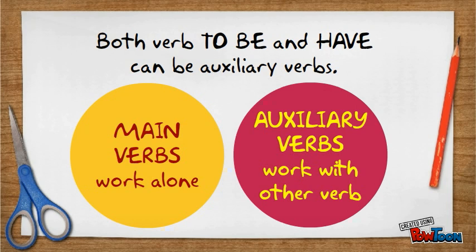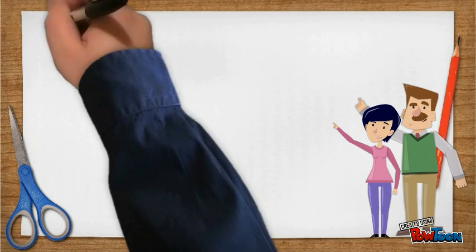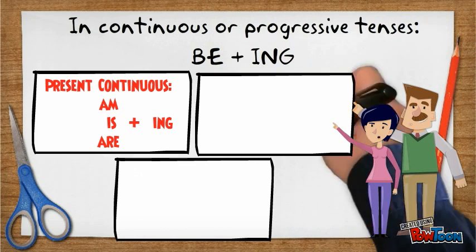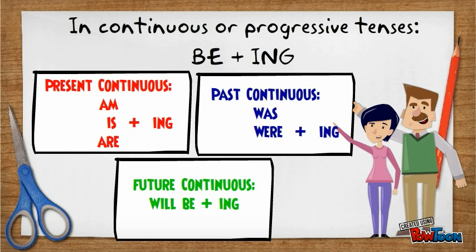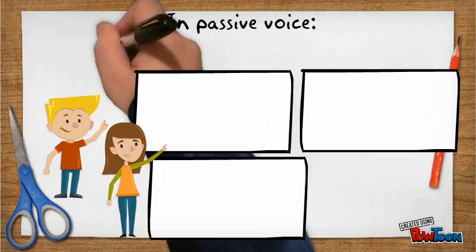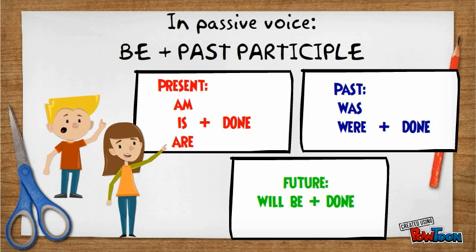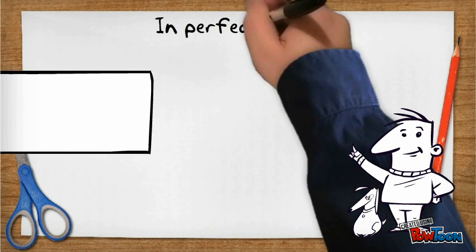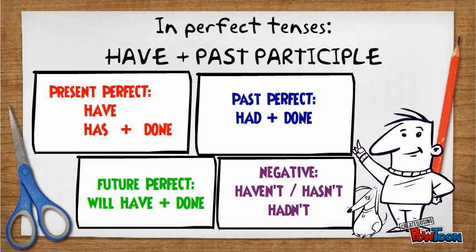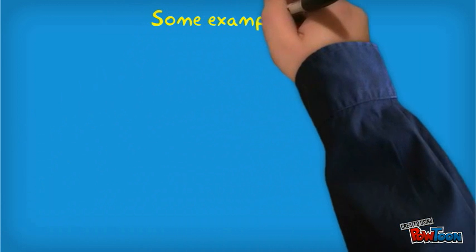The verbs TO BE and HAVE can be auxiliary verbs in some verb tenses. In continuous or progressive tenses, we need to use the verb TO BE plus another verb in the ING form. In the passive voice, we can use the verb TO BE plus another verb in the past participle. Let's see some examples.